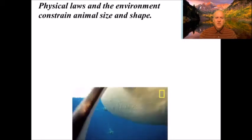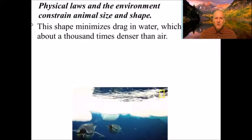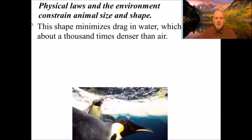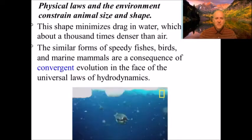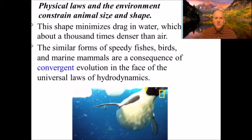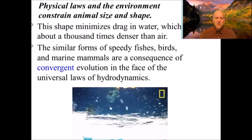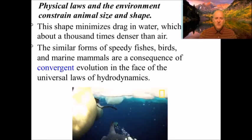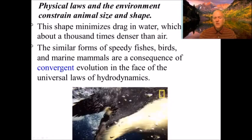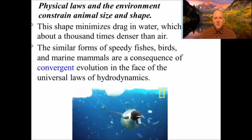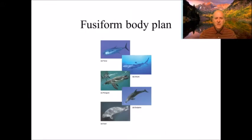Physical laws constrain animal size and shape. The fusiform shape minimizes drag in water, which is about a thousand times more dense than air. The similar form of speedy fishes, birds, and marine mammals is a consequence of convergent evolution in the face of the universal laws of hydrodynamics. The way water works means this shape works well, so lots of unrelated animals evolve to look similar — that's convergent evolution.